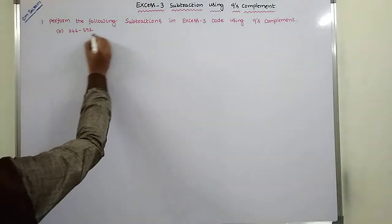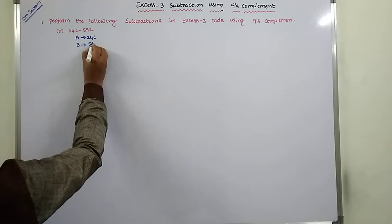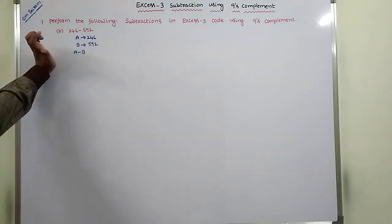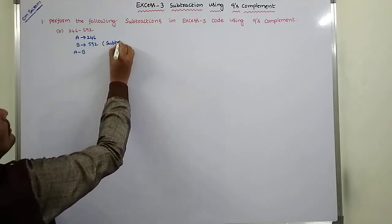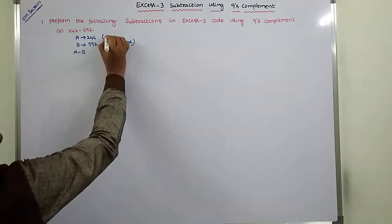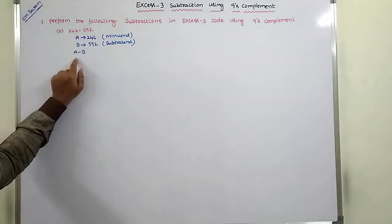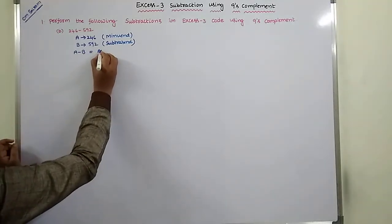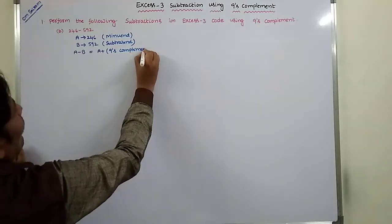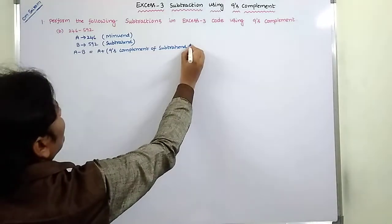So here, A can be taken as 246 and B can be taken as 592, then we have to perform A minus B. The number being subtracted is called the subtrahend; the number from which subtraction is performed, that is 246, is called the minuend. We have to perform A minus B, which is equal to A plus the 9s complement of subtrahend B.